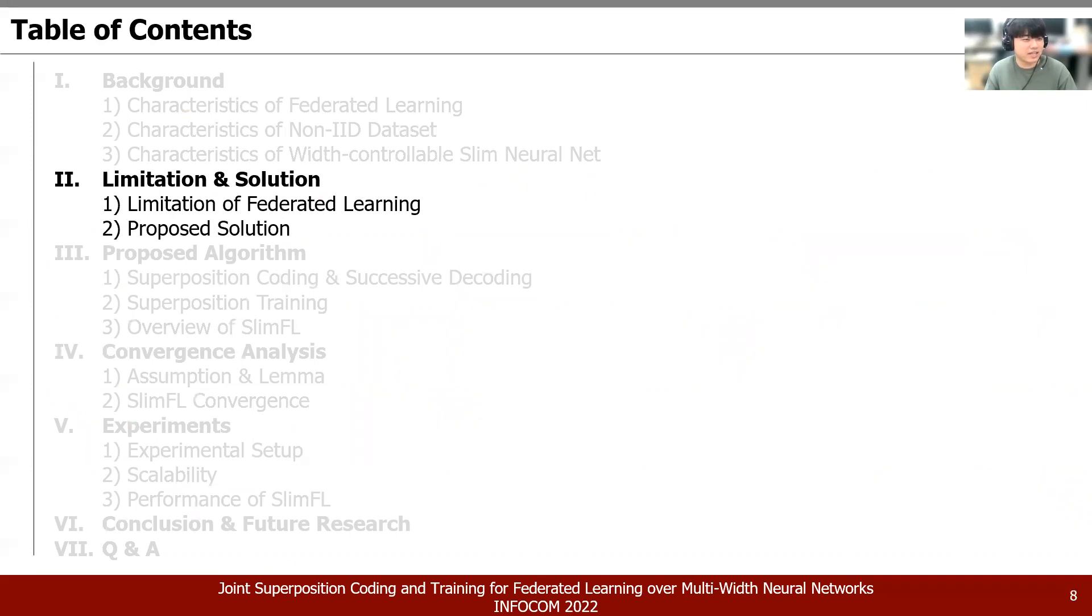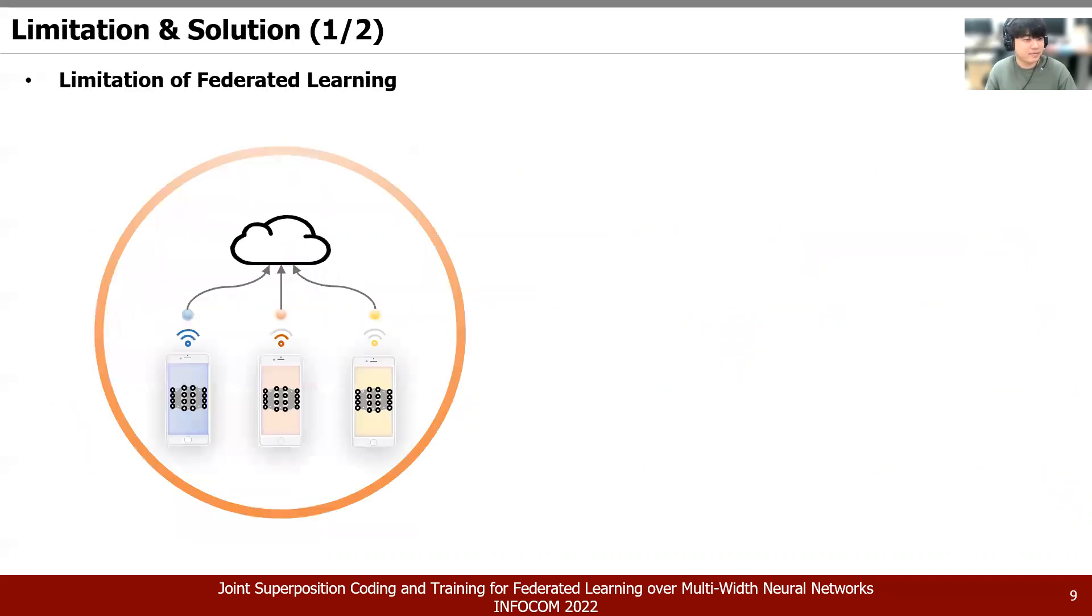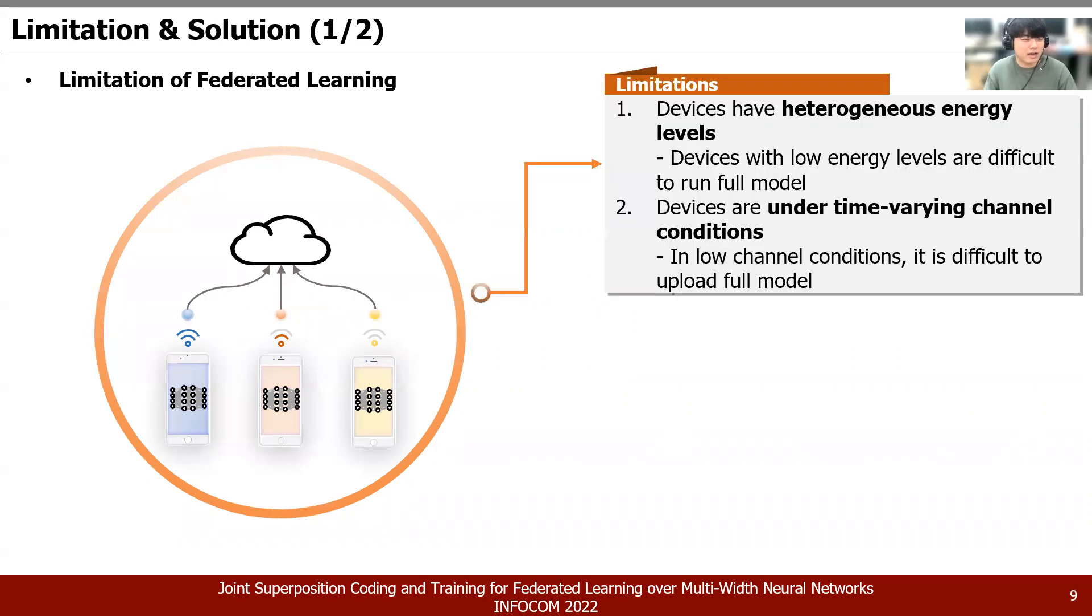For the next section, we will be discussing the limitations. There are several limitations of running Federated Learning in real communication environments. Federated Learning is based on the environment with a massive number of devices, and these devices have heterogeneous levels of available energies. Because of these, devices with low energy levels are difficult to run the full model, and under time-varying channel conditions, these devices also cannot upload the full model easily as well.